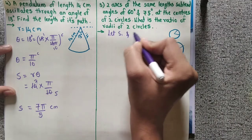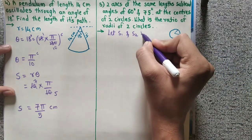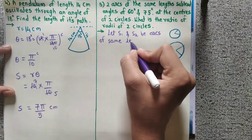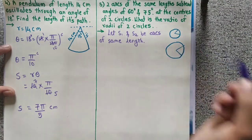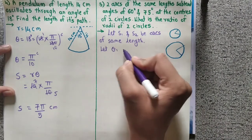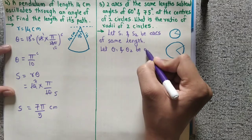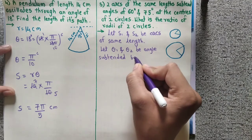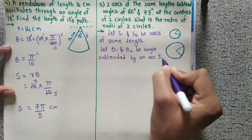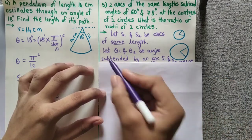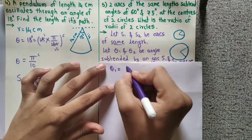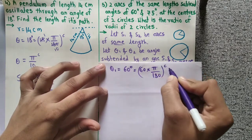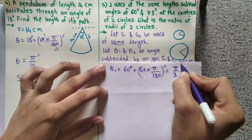Let s1 and s2 be arcs of the same length, and theta1 and theta2 be angles subtended by arcs s1 and s2 respectively. So theta1 is 60 degrees, equal to 60 into pi upon 180, which we convert to radians — giving pi upon 3 radian.